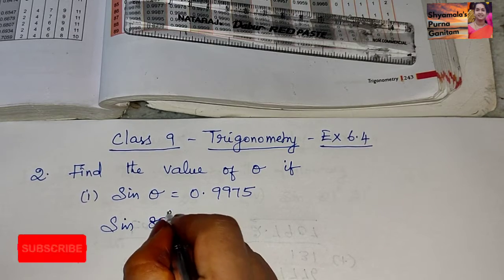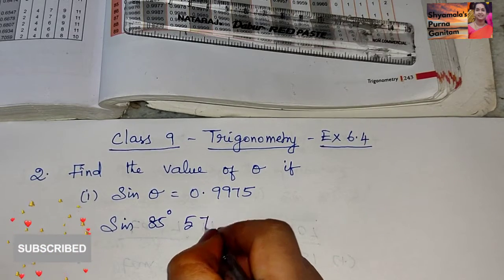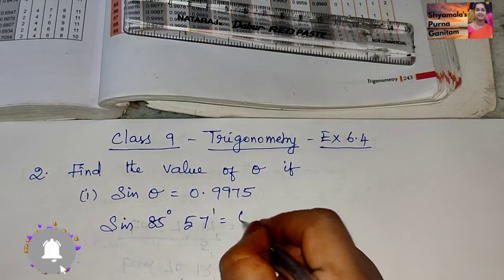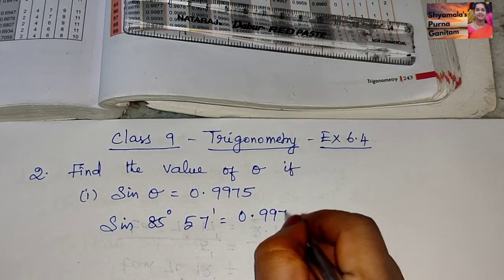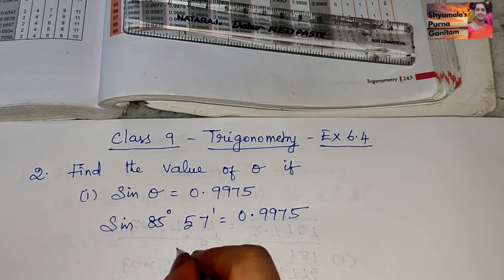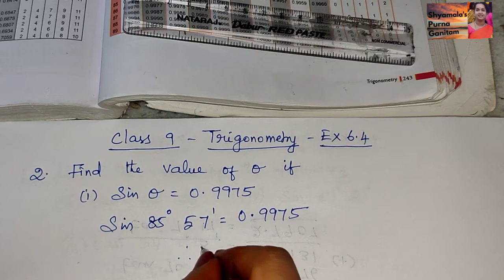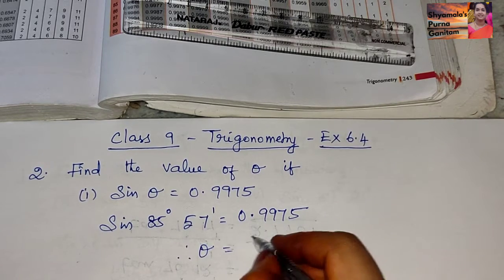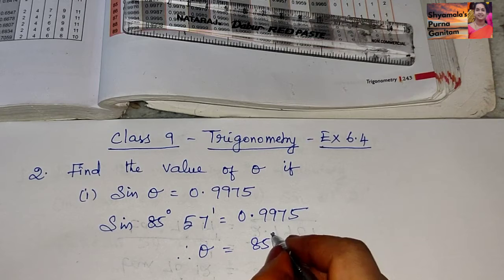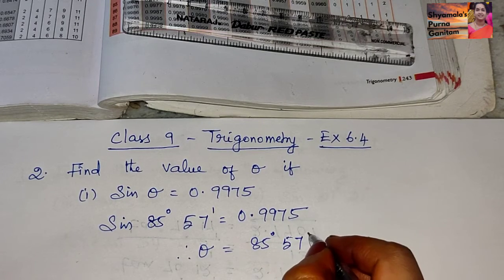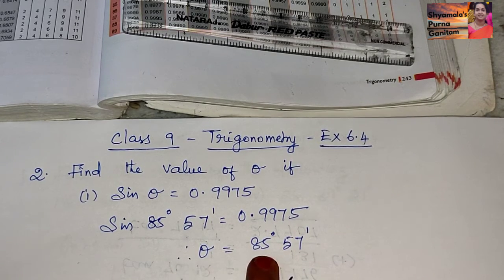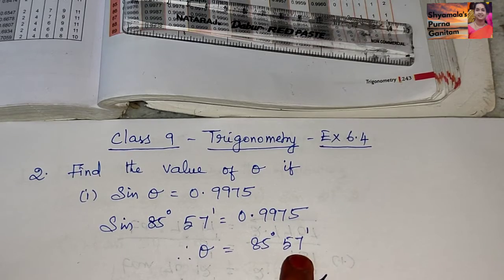So the value for this one will be sin 85 degrees 57 minutes equals 0.9975. Therefore, theta value will be 85 degrees and 57 minutes.